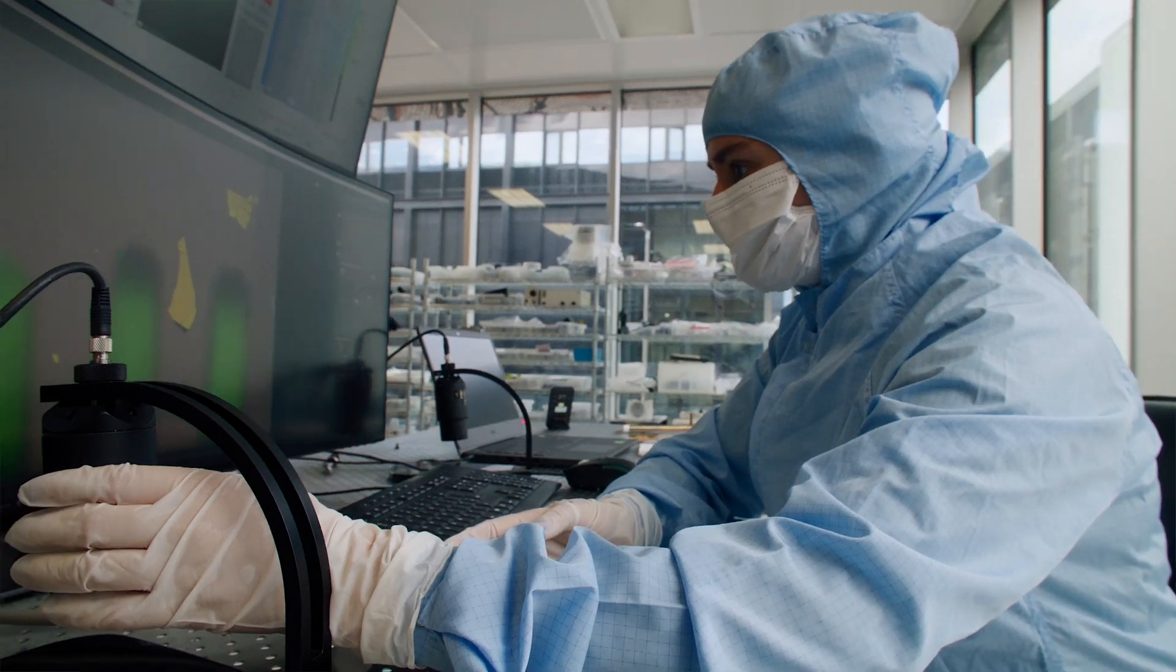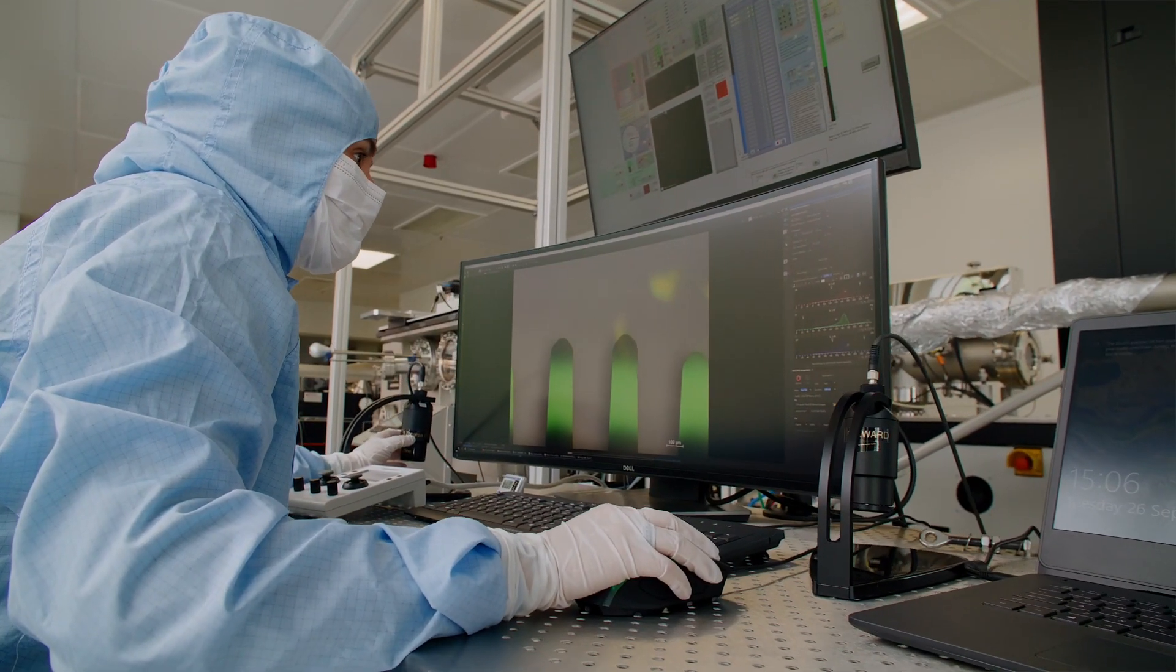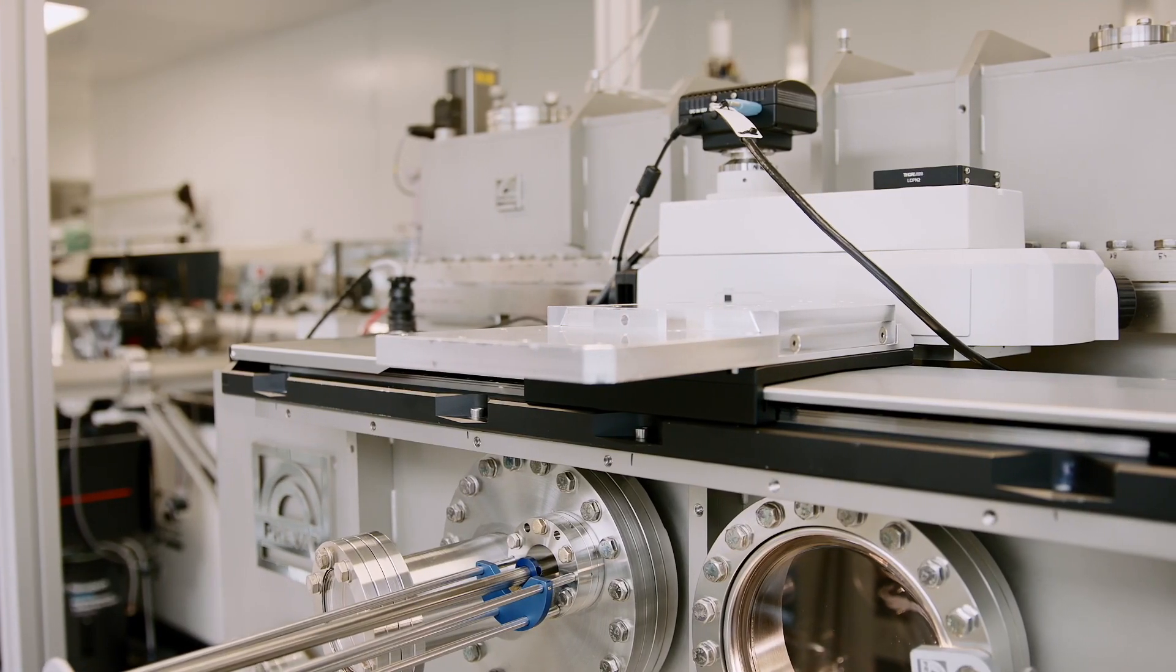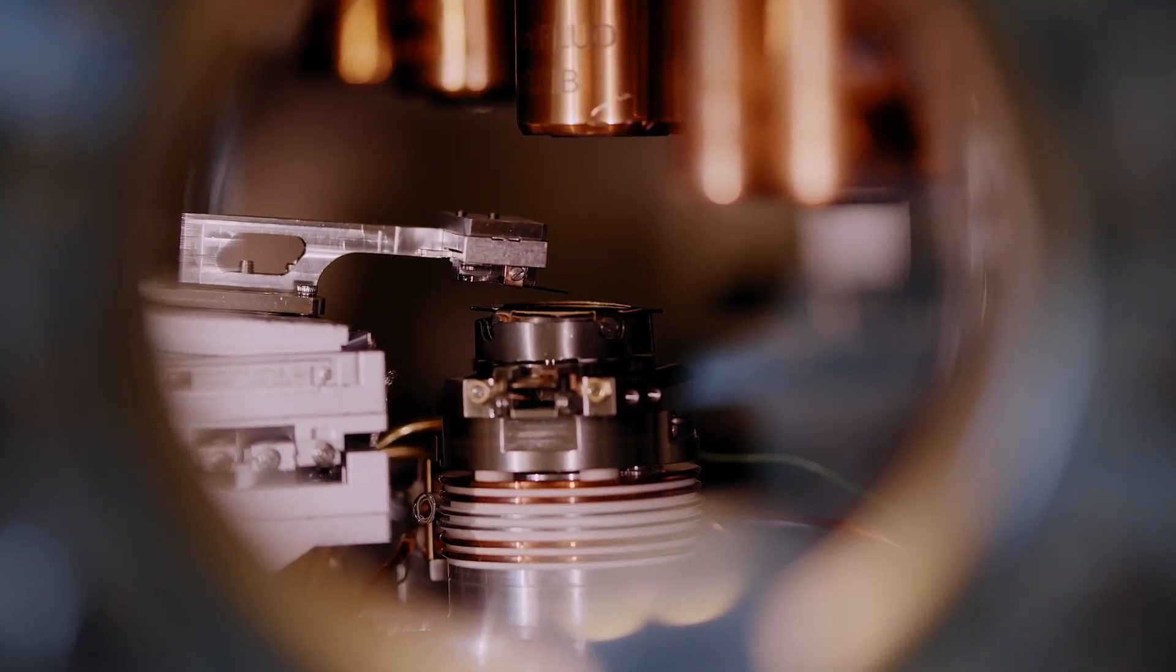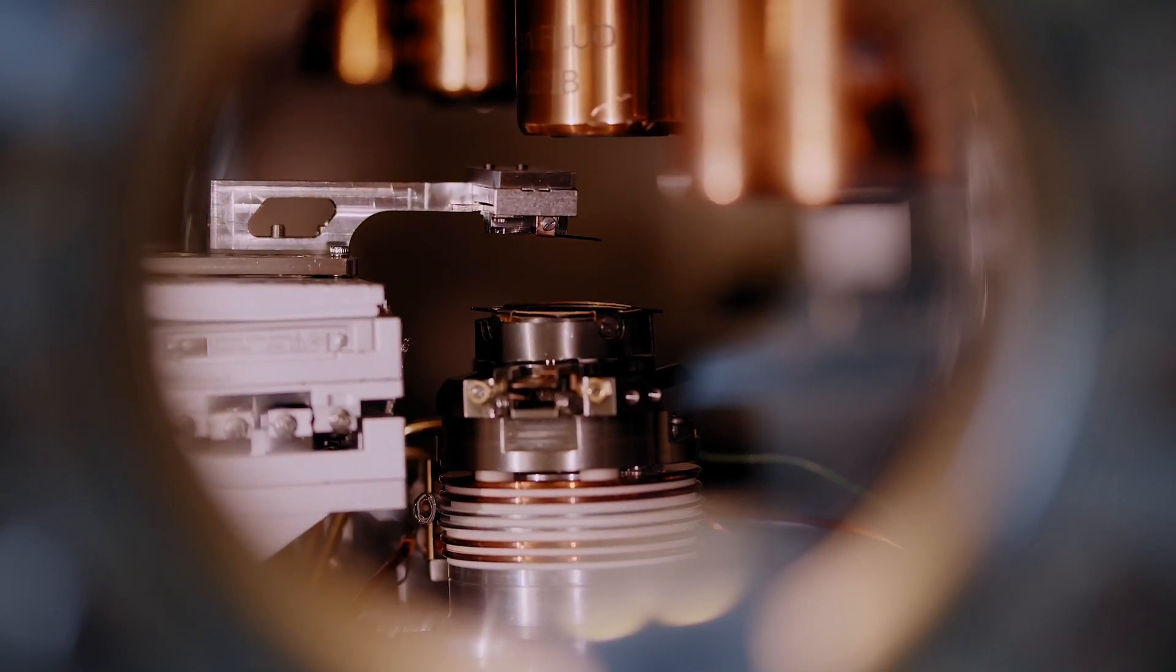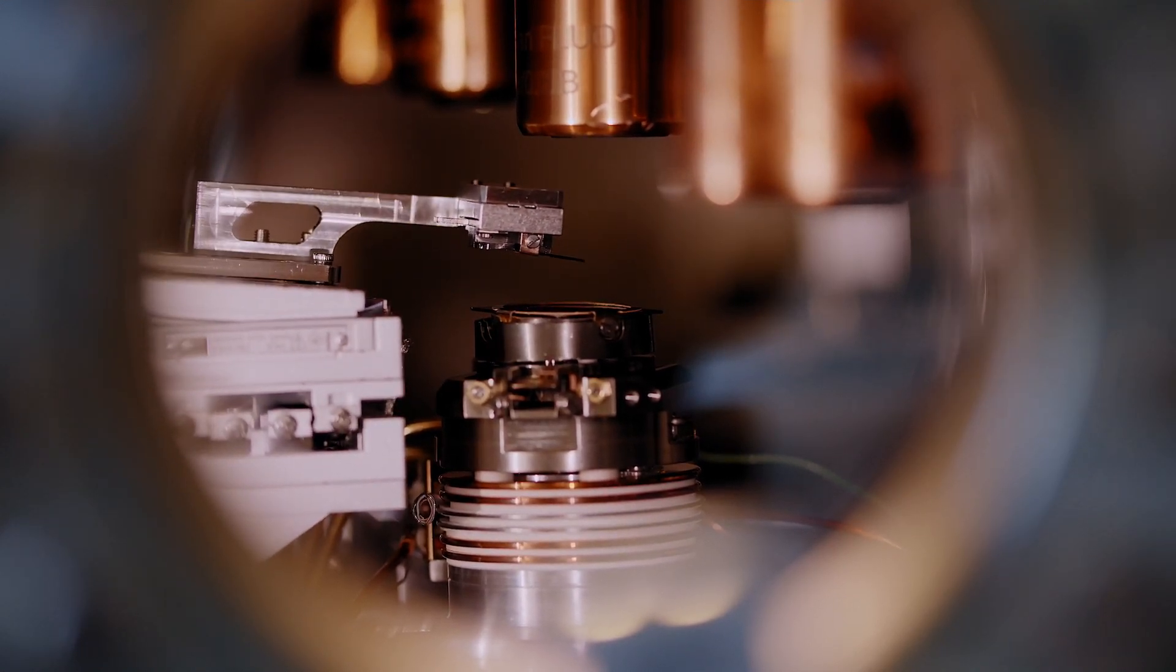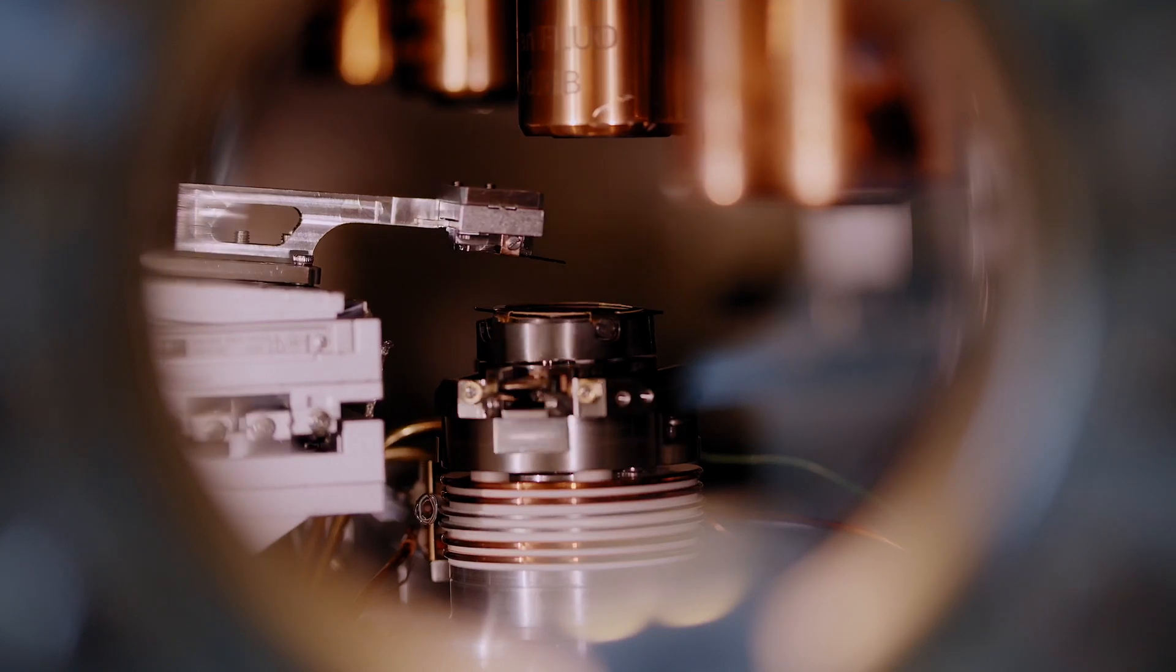We can use the optical microscope setups we have in the core chamber to easily search through all these exfoliations to find the crystals with the exact dimensions and thicknesses we need. We have two stages that can all move in X, Y and Z, they can rotate and tilt. This means we can position our crystals with up to nanometre precision.